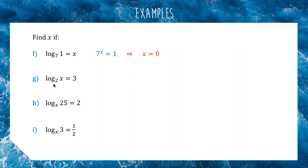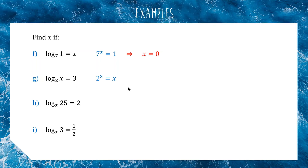Question G: we'll start with our base. Base to the power of answer equals subject. So 2 to the 3 equals x. We can get the answer for x straight away because 2 to the power of 3 is 8, so x equals 8.